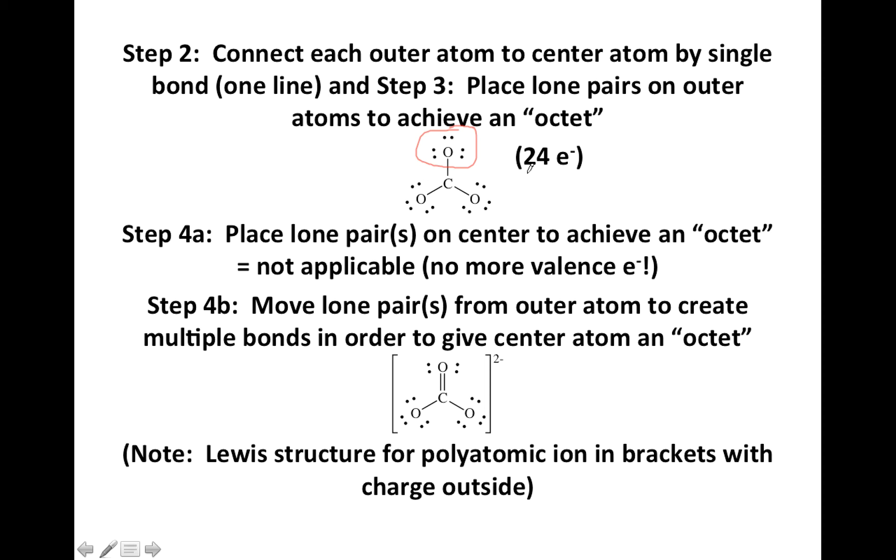It's got eight, as do the other two oxygens. Right now we have twenty-four electrons, and we're supposed to have twenty-four. So that's the good news, but notice carbon has three lines coming off of it. That's six electrons, and it's supposed to have eight.